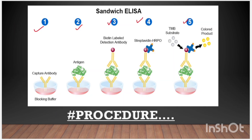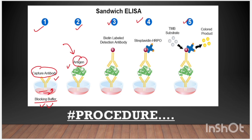Now let's look at this figure. What is shown here? There is a blocking buffer, and these are the primary antibodies. Because there are two types of antibodies in Sandwich ELISA, the primary antibodies capture the antigen — meaning the antigen is connected to them. That's why we also call them capture antibodies. We use the blocking reagent here. You can see in the figure that the antigen, shown in green, is connected to the yellow capture antibody.